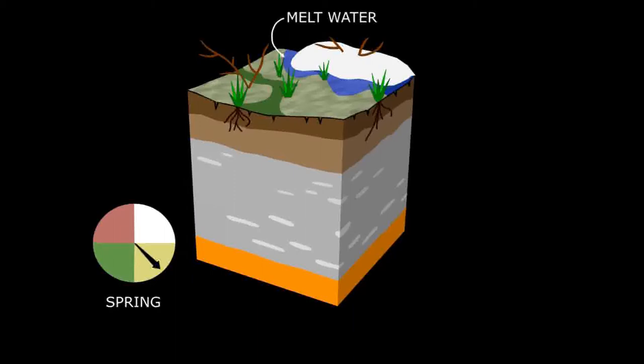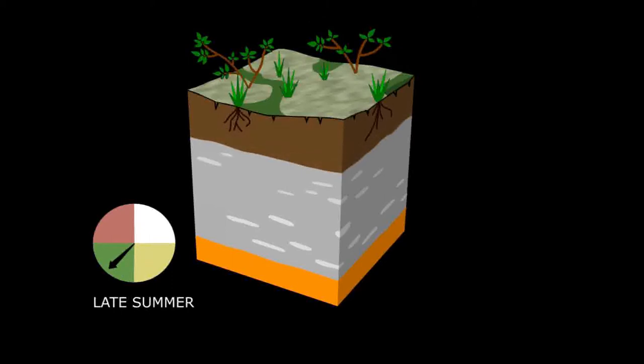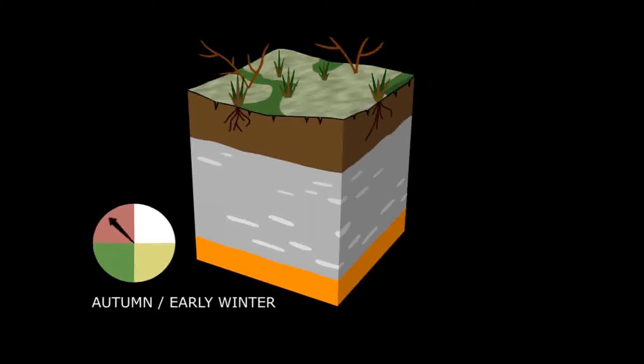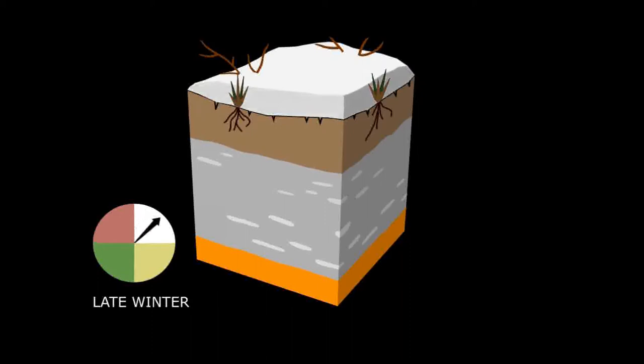You can follow this cycle again. Spring, the active layer is thawing out, vegetation develops. In late summer, as we move into autumn and early winter, then two-sided freezing occurs, snow comes, the soil surface heaves up and down as it freezes and thaws.